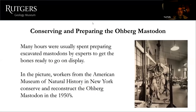After mastodon bones are found, they have to be conserved and prepared before going on display at the Rutgers Geology Museum or New Jersey State Museum. The Oberg Mastodon was taken to the Museum of Natural History in New York in the 1950s, where conservators put it together, treating the bones so they wouldn't degrade and getting them ready for display. Once the bones were excavated, there was still a lot of work to get it ready for the museum.